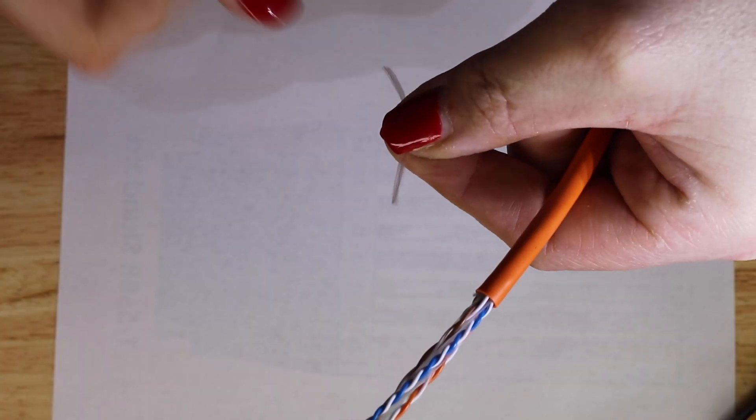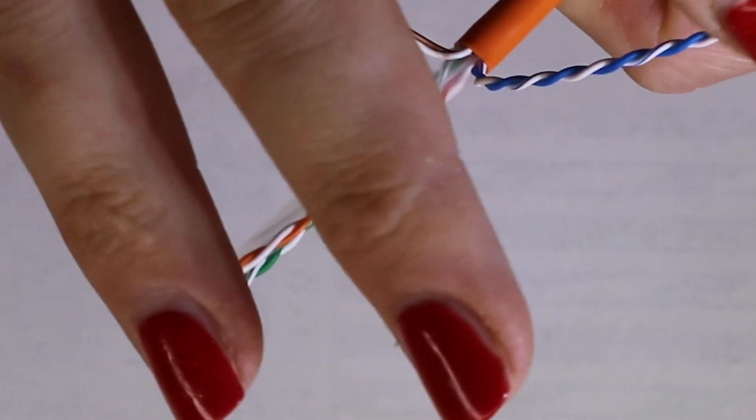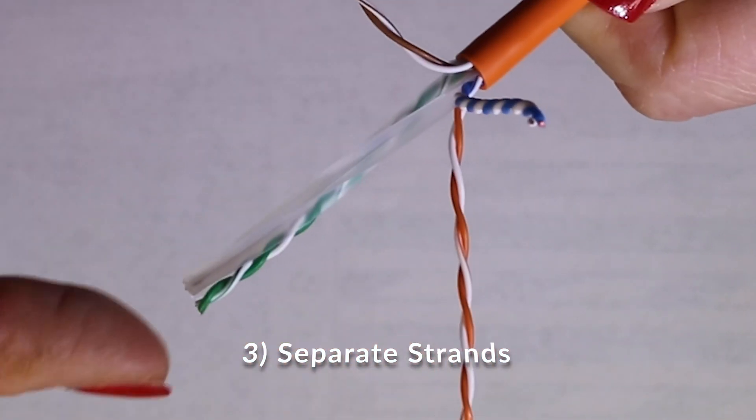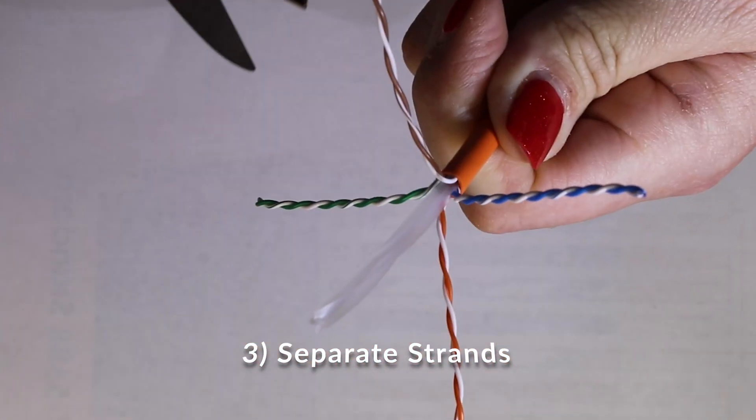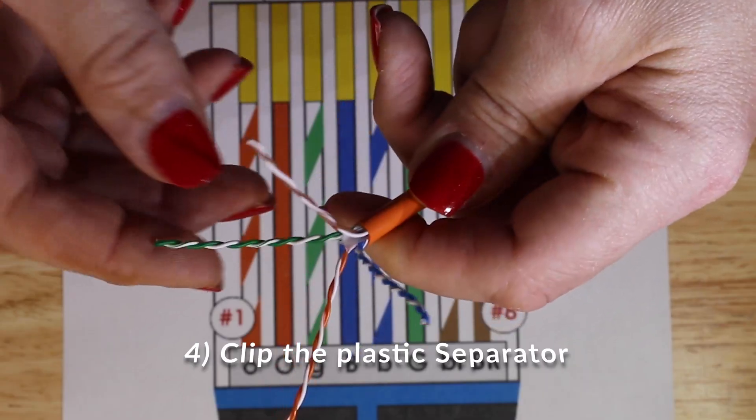I'm using some Klein scissors to do that, and then I'm going to start by separating the pairs of wires that are inside the CAT6 cable. There are four pairs in there for a total of eight wires, and inside this specific type of cable from Monoprice, there's a divider that's plastic.